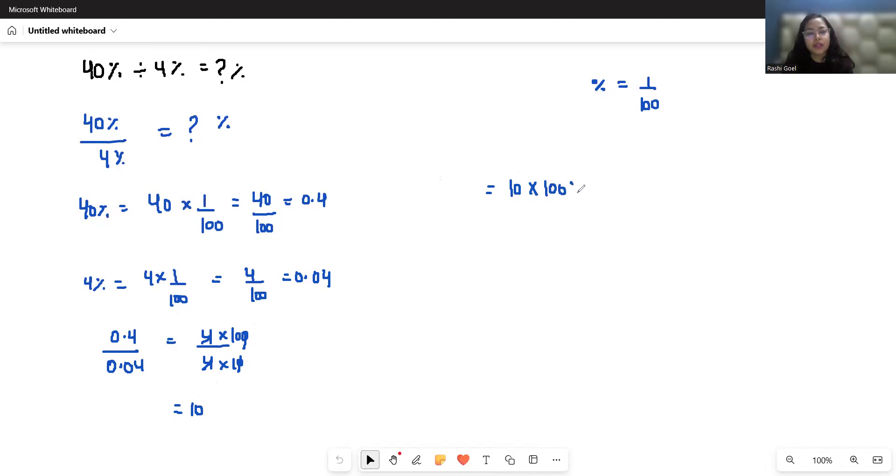So we can write 10 multiply 100 percent. And 100 percent equals 100 multiply 1 by 100, that is 1. So our final answer is 1000 percent, not 10. I hope it's clear and you find it useful.